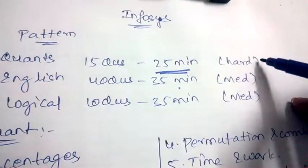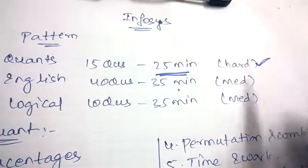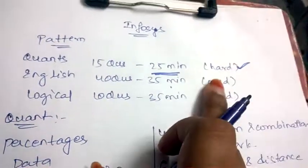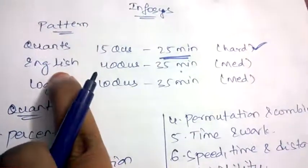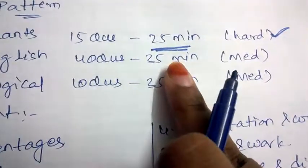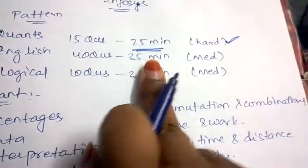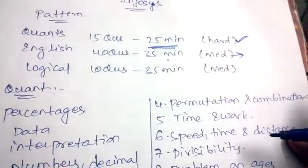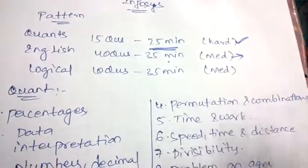The difficulty level will be really high. Coming to Quants, the questions will be really hard. Coming to English, 40 questions will be asked out of which you are given 25 minutes, and it is basically medium level. It's not so hard or so easy, it's just medium level.